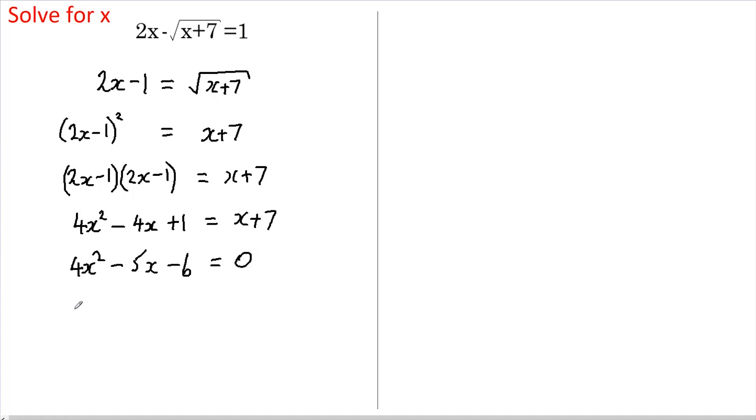We now need to factorize the left hand side. In other words, we need two terms we multiply together give us 0. It is possible to do this straight away, but it's not an obvious answer. So I'm going to use the quadratic formula.